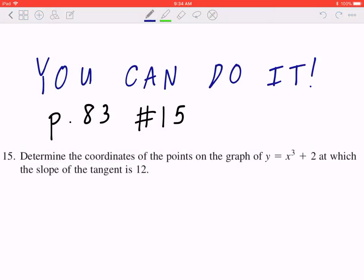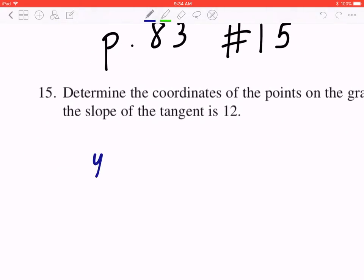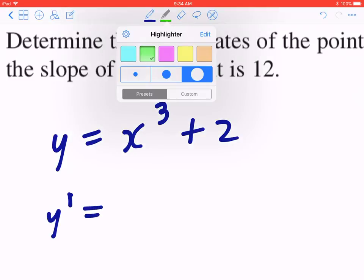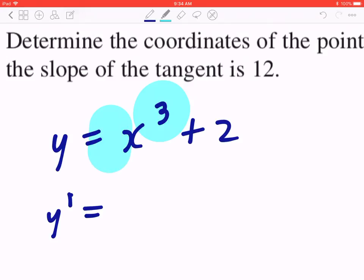Step 1: Find the general slope for y equals x cubed plus 2. When you find the general slope, you have to find y prime and you can apply the power rule. Bring the exponent to the front, so you can take 3 times 1, which is 3. You copy x.